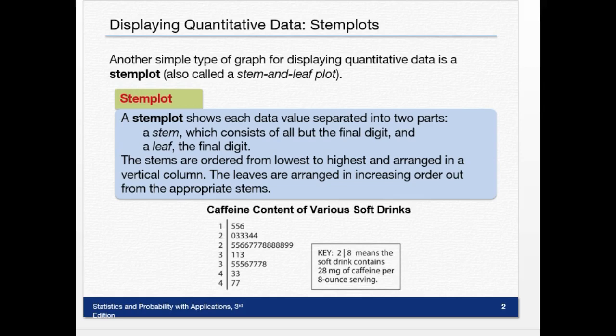A stem plot shows each data value separated into two parts: a stem, which consists of all but the final digit—that's really important, it's all but the final digit—and a leaf, which is the final digit.